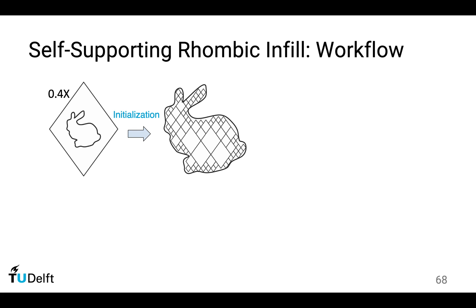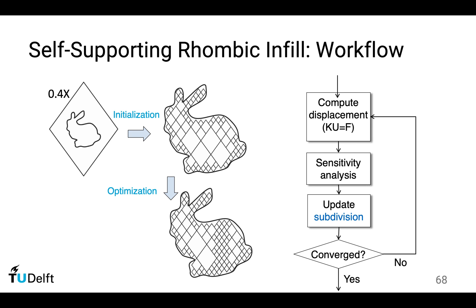This shows how this principle works. If we are given this bunny, we first initialize it with an adaptively refined rhombic structure, which is refined along the boundary to accommodate geometric details. If we have an external force applied — for instance, a load applied on the back pointing downwards — by optimization we determine which rhombic cells have to be subdivided. This subdivision will increase the strength and stiffness. But since all these structures have the same aspect ratio, they maintain self-support.